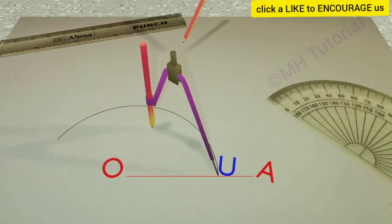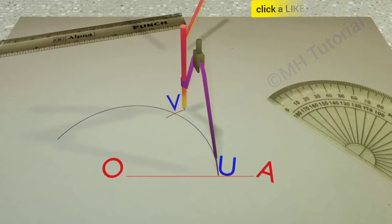Another circle arc of the same radius is drawn. This time point U is taken as the center. It intersects the previous circle arc at the point V.